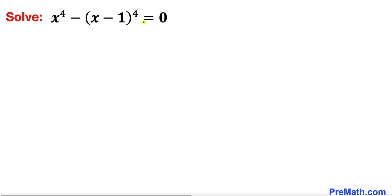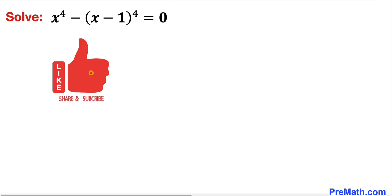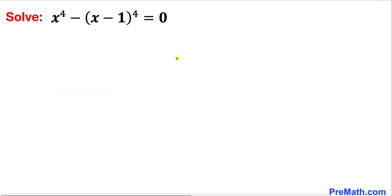Welcome to pre-math. In this video we are going to solve this given exponential equation: x to the power 4 minus (x minus 1) to the power 4 equal to 0. Please don't forget to give a thumbs up and subscribe.